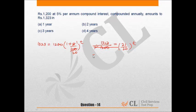It can be written as 1323 upon 1200 equals 441 upon 400, which equals 21 upon 20 square, that is equal to 21 upon 20 to the power t. Hence t equals 2 years.